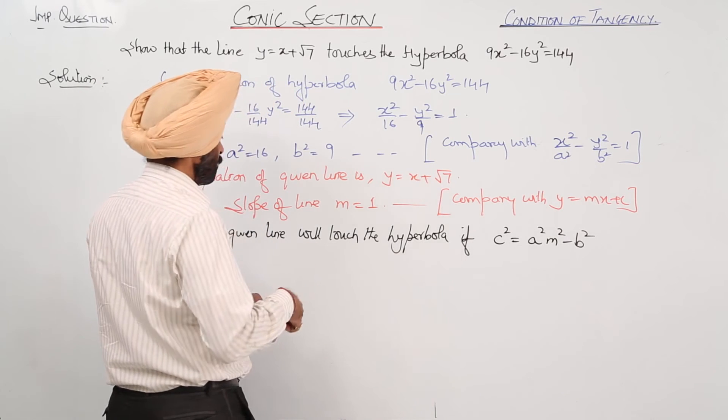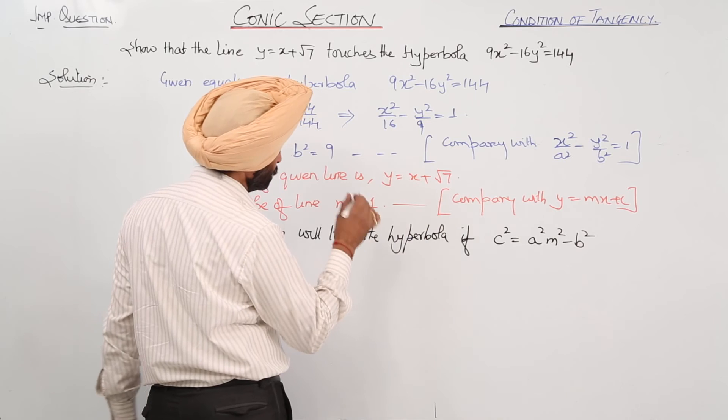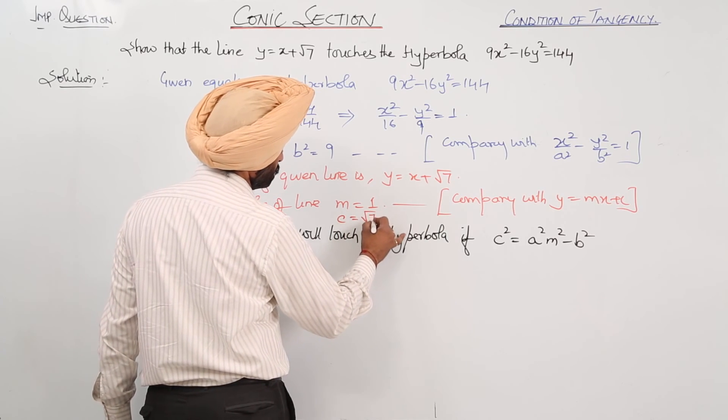Here slope of the line m equals 1, and we also require c, and c equals root 7.